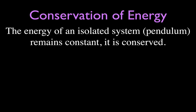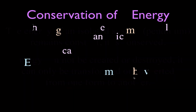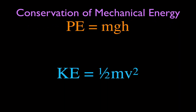Let's go over a quick definition of what conservation of energy is. It is simply that the energy of an isolated system — in this case the pendulum — remains constant; it is conserved. The most common definition is that energy cannot be created or destroyed; it can only be transformed or converted from one form to another. In this video we talk about the conservation of mechanical energy.